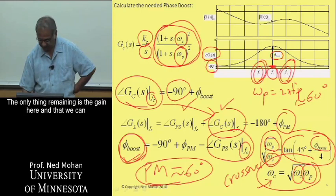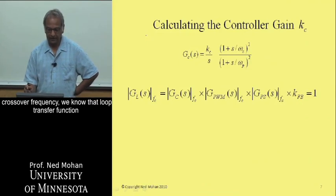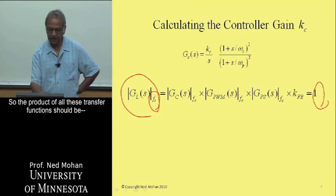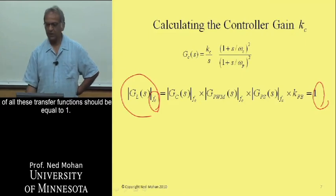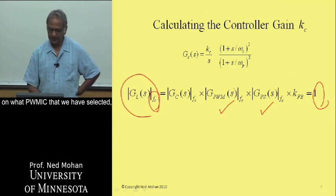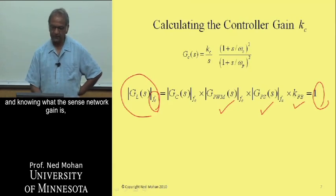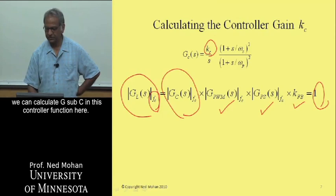The only remaining unknown is the gain A sub C, which can be calculated easily. Since we've decided on the crossover frequency, the loop transfer function gain must equal one at that frequency. So the product of the gains of all transfer functions must equal one. Knowing the power stage Bode plot gain, the PWM IC gain, and the sense network gain, we can calculate A sub C.